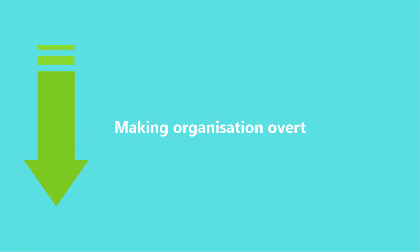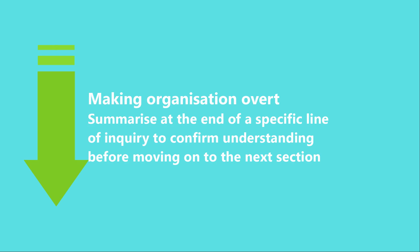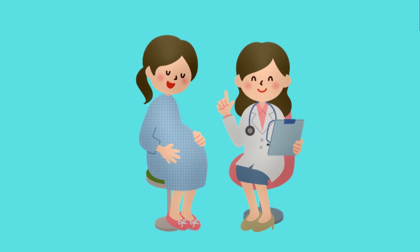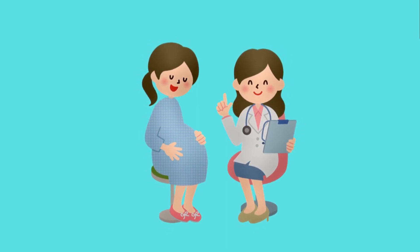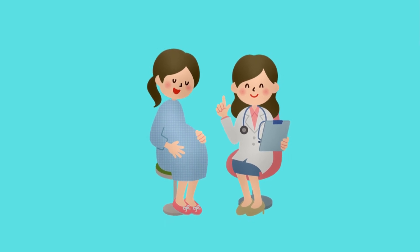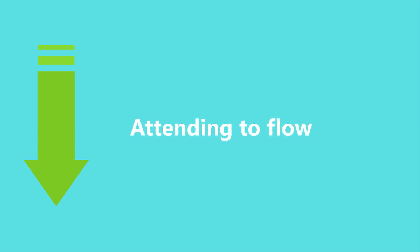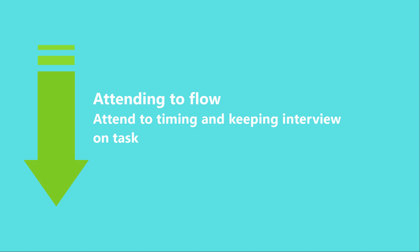The second thread in the Calgary-Cambridge model is providing structure. It's important to make organization overt — summarize at the end of a specific line of inquiry to confirm understanding before moving to the next section. Use signposting and transitional statements, including the rationale for the next section. For example, you might say, 'Before I examine you, is it okay if I make sure we're on the same page?' Then summarize your understanding and check before proceeding. Attending to timing and keeping the interview on track is essential.